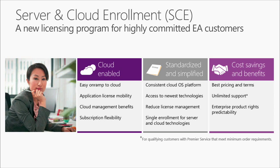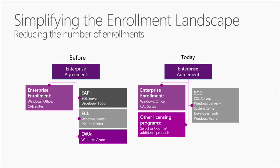Let's look at a comparison between previous enrollments under the EA and the new enrollment landscape with SCE. Microsoft has simplified the enrollment landscape under the EA to support the cloud OS. Previously under the EA, customers could take advantage of three enrollments beyond their enterprise-wide desktop commitment: the Enrollment for Application Platform, the Enrollment for Core Infrastructure, and the Enrollment for Windows Azure. The Enterprise Enrollment is where customers make installed base-wide commitments to Windows Client, Office, the Core CAL, and eCal in return for a discount of 15% off license and Software Assurance SKUs, 5% off SA SKUs, and other benefits. This remains unchanged in the new enrollment landscape.